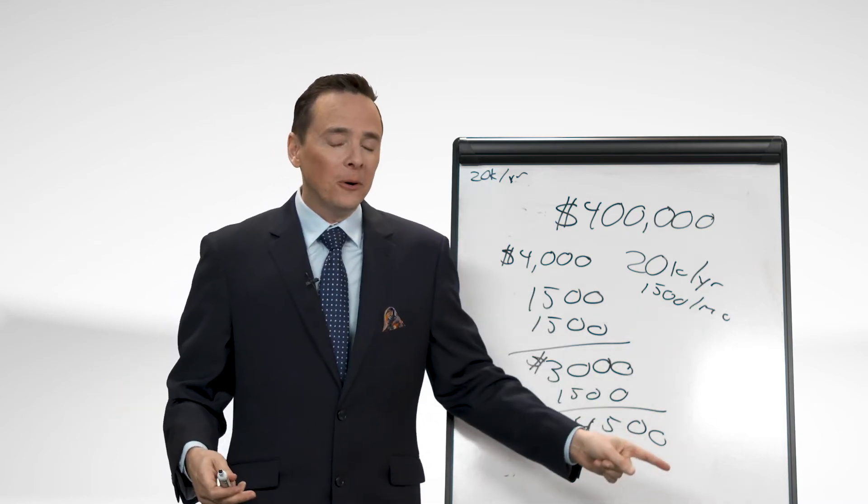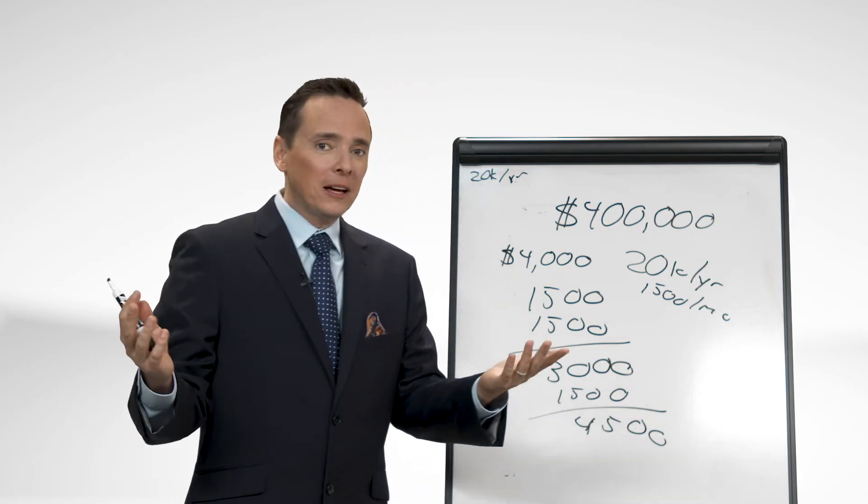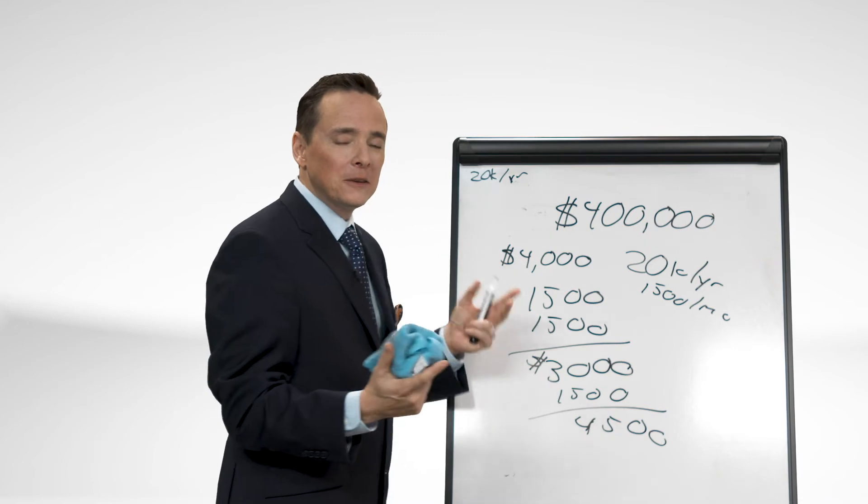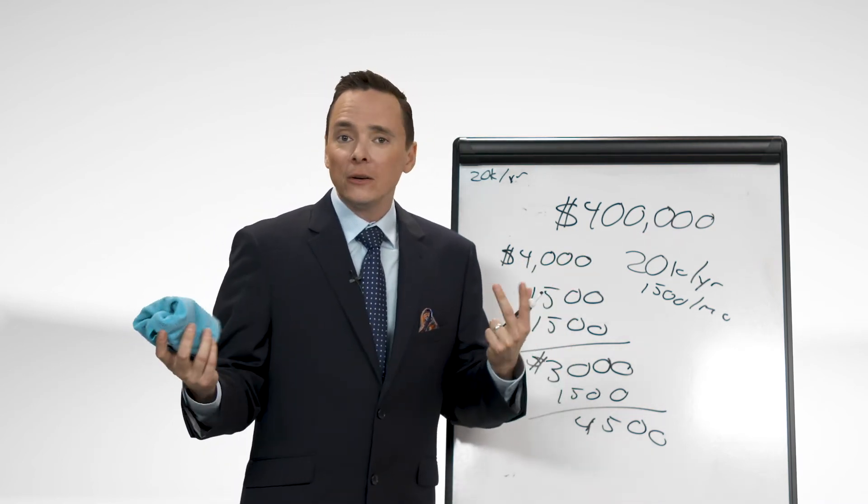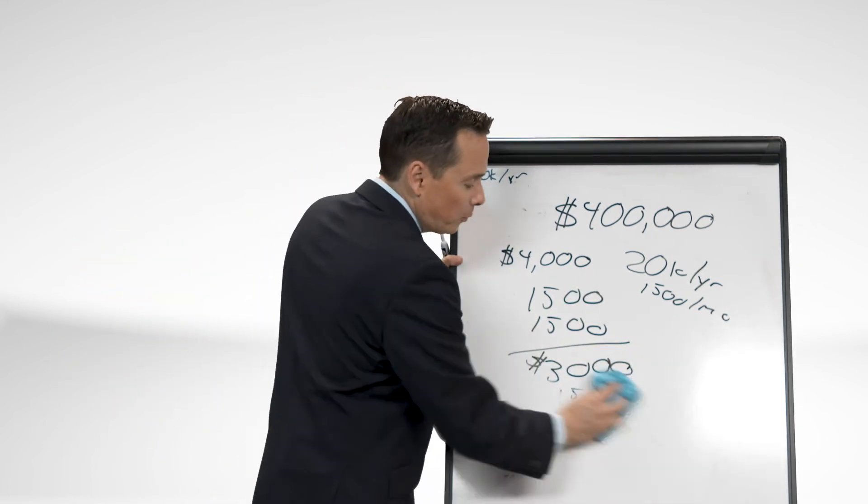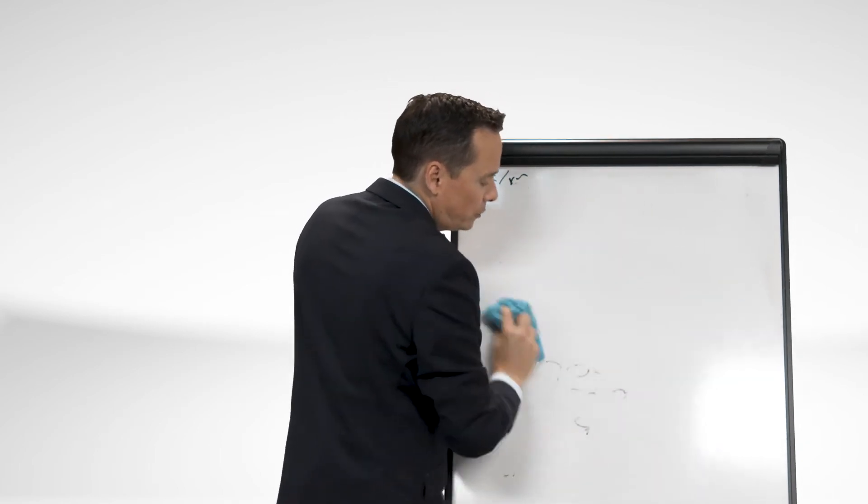But the variable that invariably people miss, and I understand why, is they forget that this $400,000 does not stop growing when you retire. It does not freeze in time, which is great news, right? The variable is this $400,000 is going to continue to grow.